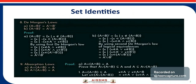Here we are going to study De Morgan's laws. The first De Morgan's law is: (A union B) complement is equal to A complement intersection B complement. The second De Morgan's law is: (A intersection B) complement is equal to A complement union B complement.